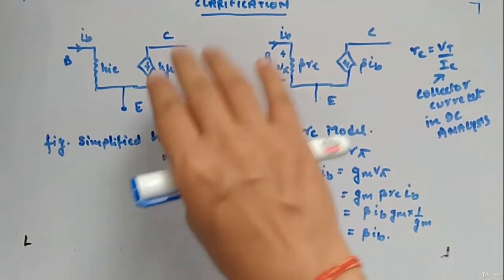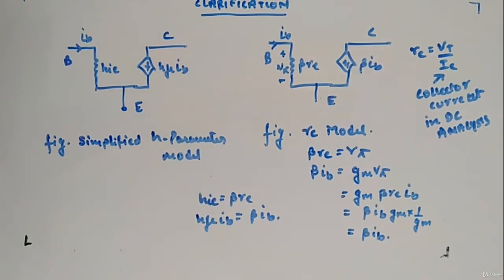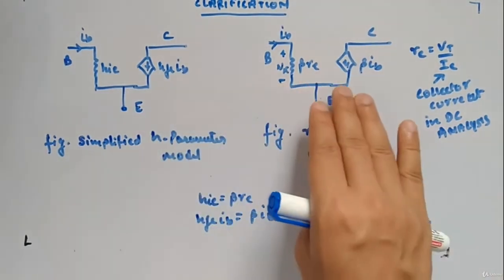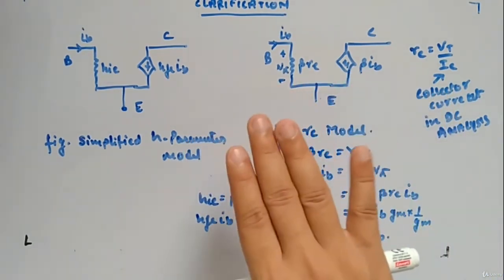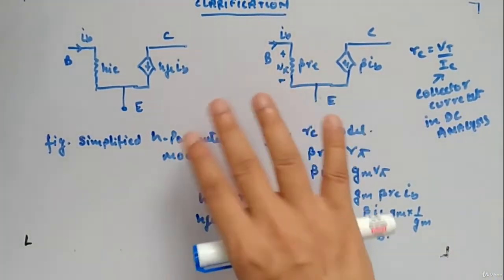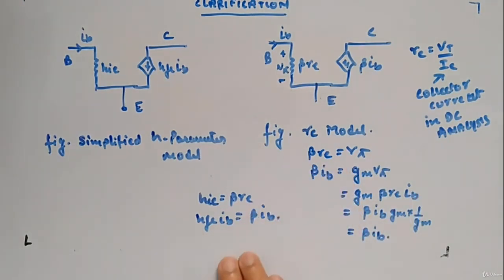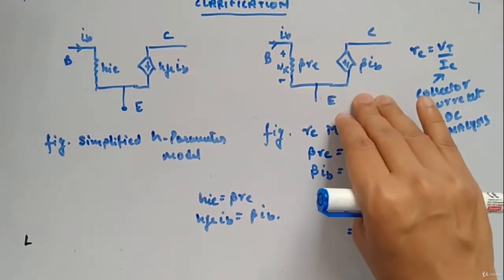You might have seen this one as well when I was explaining common base, common collector, and common emitter. They are essentially the same. I'm using this one right now, so you might get confused whether they are different or the same. They are exactly the same. This is how they are related, and I am more comfortable with this one, that's why I use it.